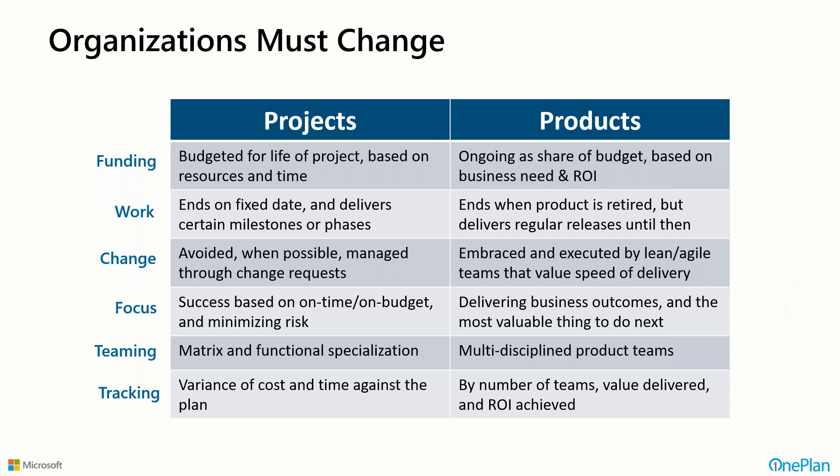Projects versus products: the focus changes. Instead of funding on an individual granular project basis, we fund at a higher level based on business need and ROI on a product line, with features or releases consuming parts of that budget. A product focus delivers continuous value over the lifecycle of a product, not a distinct project end. We use lean and agile approaches and deliver business outcomes — the most valuable thing next — not just what keeps us on time, on budget, or minimizes risk.